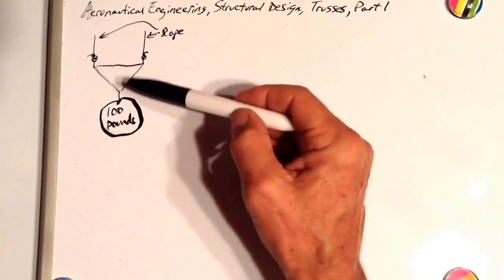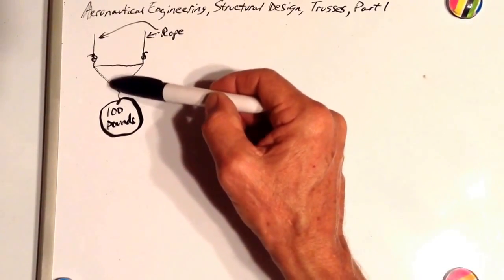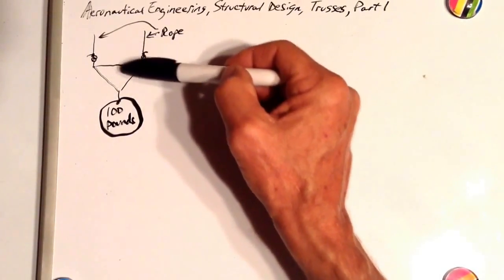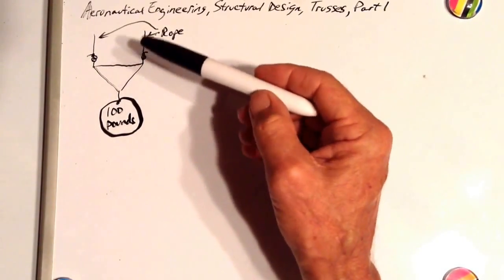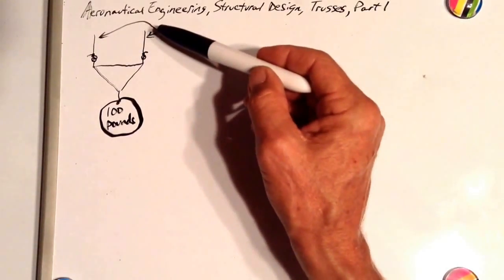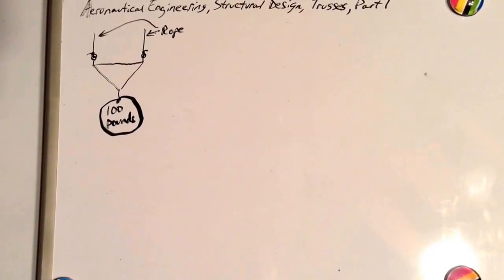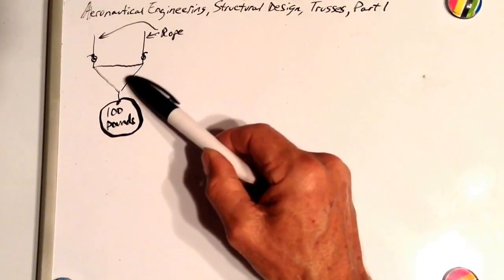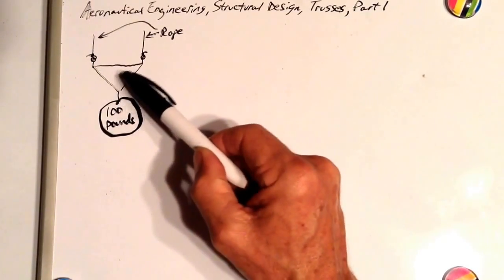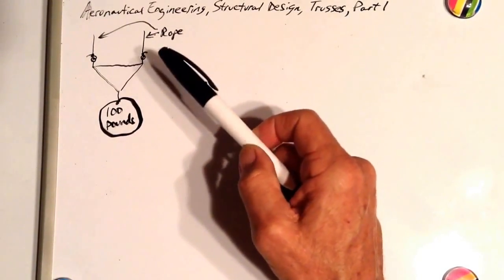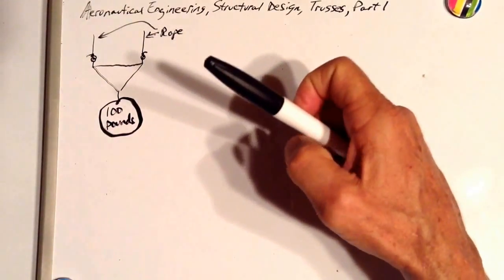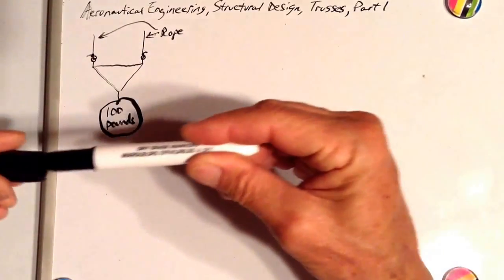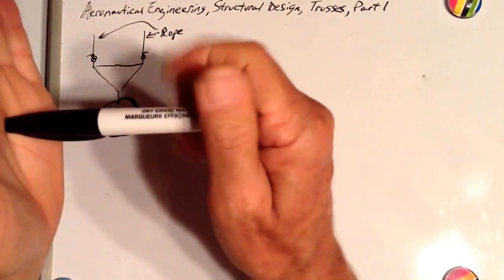If this triangle is symmetrical — in other words, everything on one side of this dotted line looks identical to the other side — if this angle equals that same angle, then each rope is carrying 50 pounds. Each of these two sections of our little triangle are in tension. Tension means you're trying to pull something; compression means you're trying to push it, like a column.